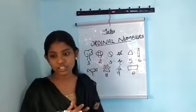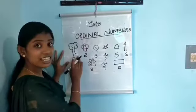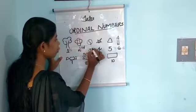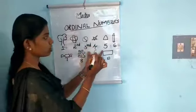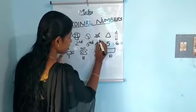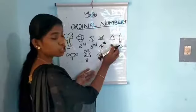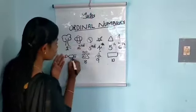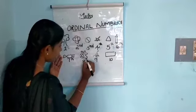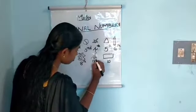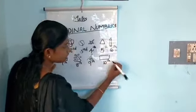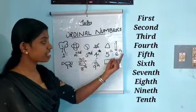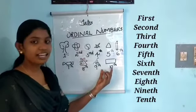First position: tree. Second: flower. Third: board. Fourth position: star. Fifth position: triangle. Sixth position: pencil. Seventh: sweet. Eighth: butterfly. Ninth position: a cat. Tenth position: rectangle. So we have first, second, third, fourth, fifth, sixth, seventh, eighth, ninth, and tenth.